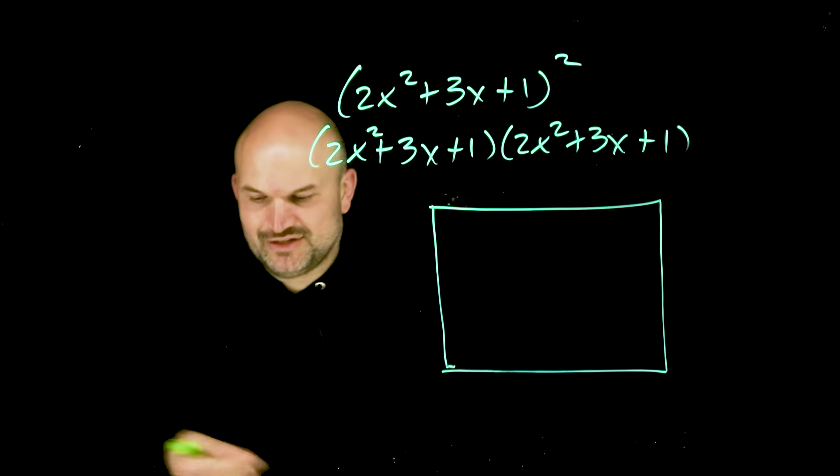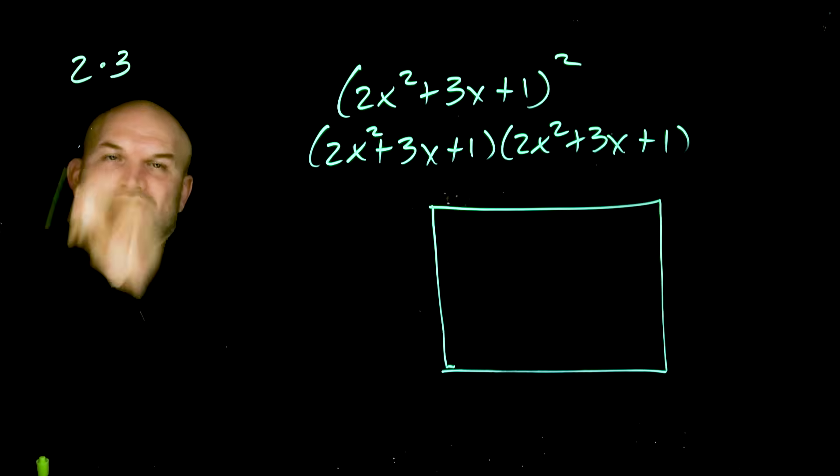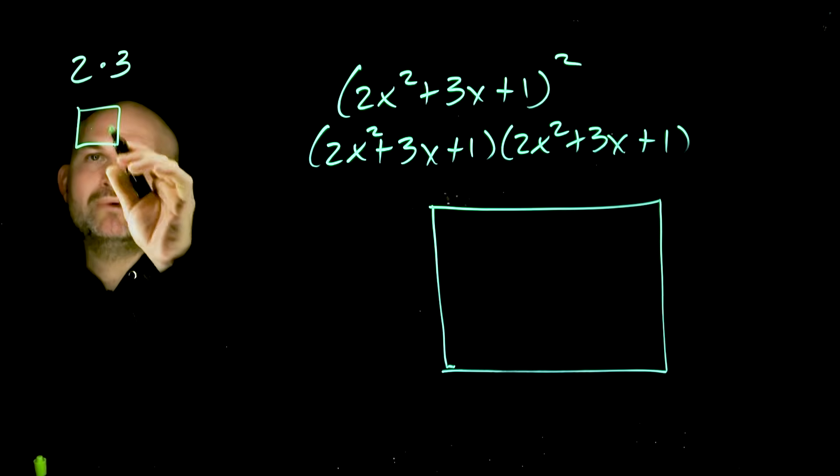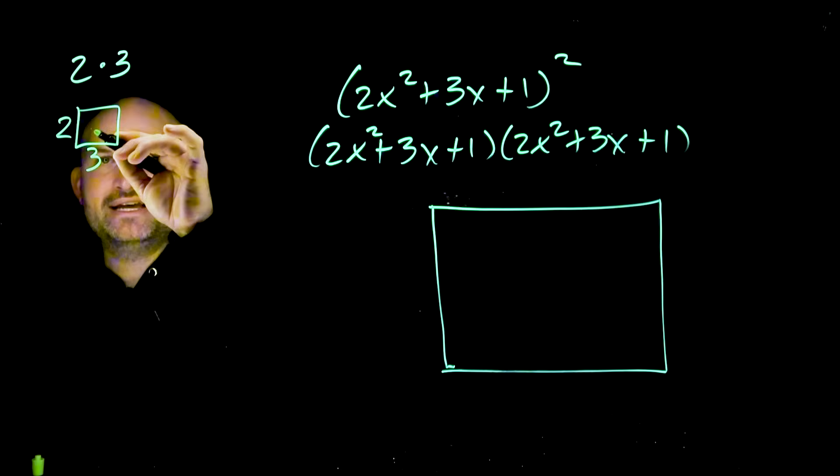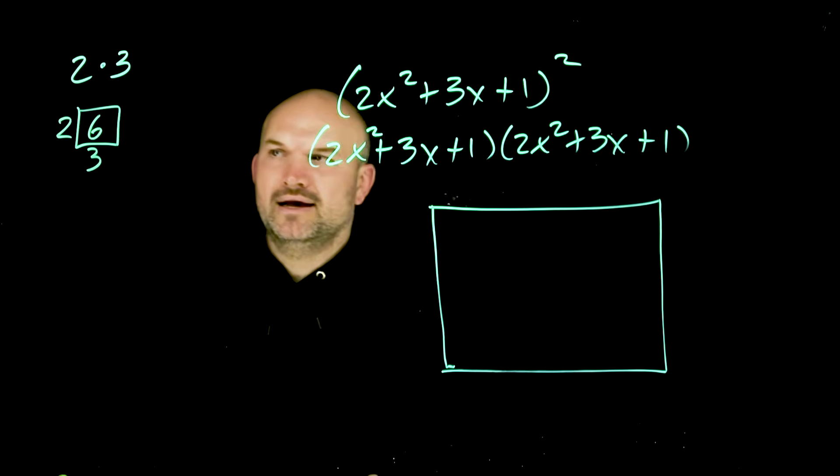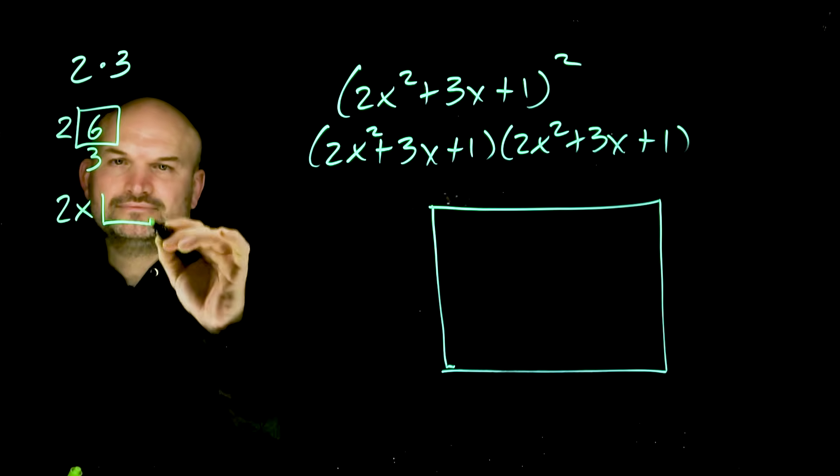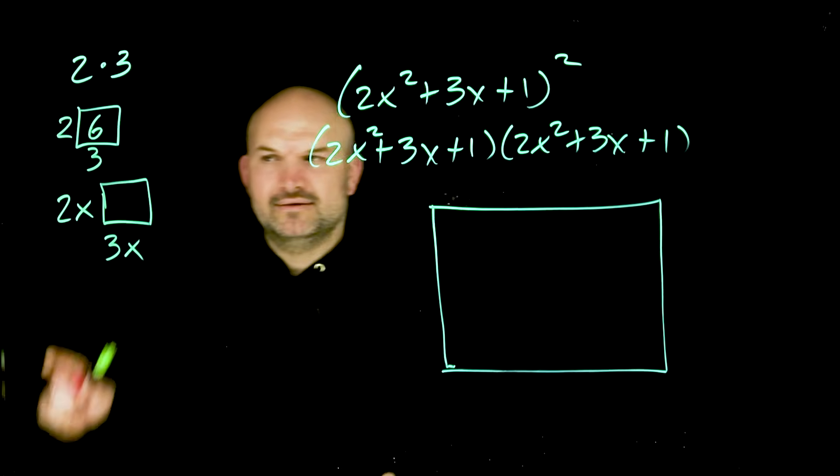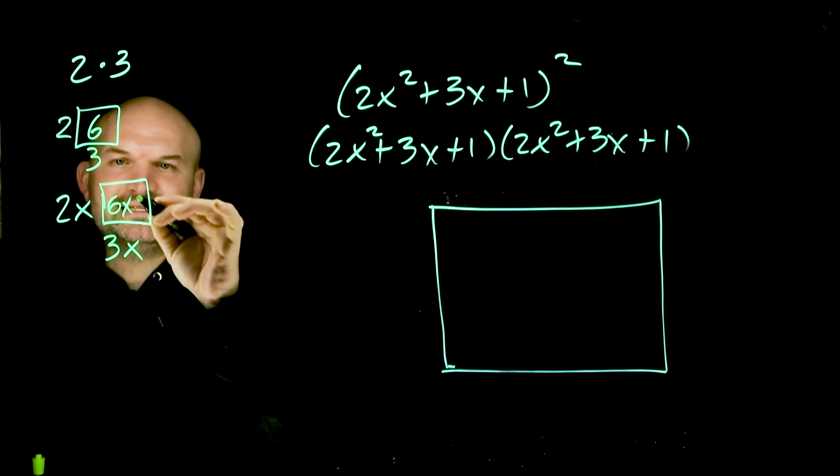Sometimes when I'm first teaching this, students get a little confused. If I said 2 times 3, wouldn't you agree you could represent that as a rectangle where 2 is the height and 3 is the width, and the area is 6? And if I had 2x times 3x, we would still represent that—even though we don't know the value of x, we could say that's going to be 6x².